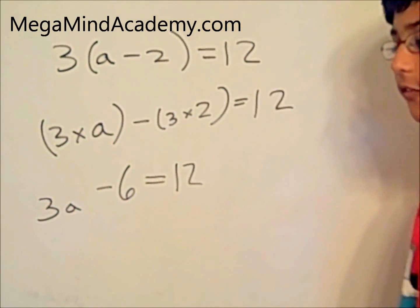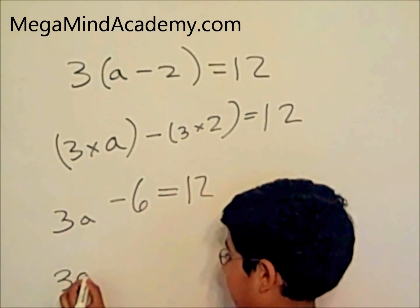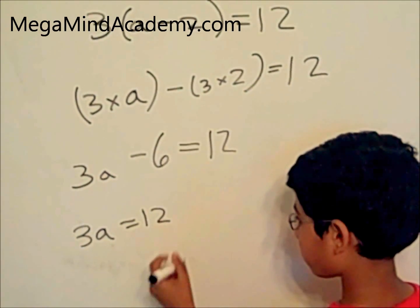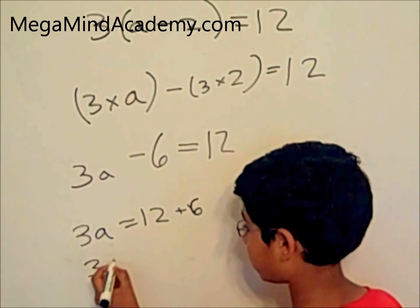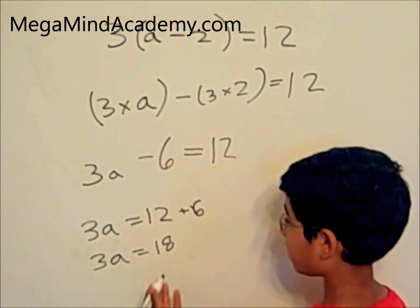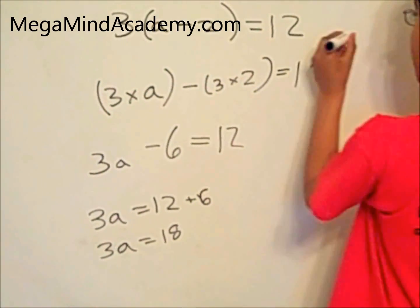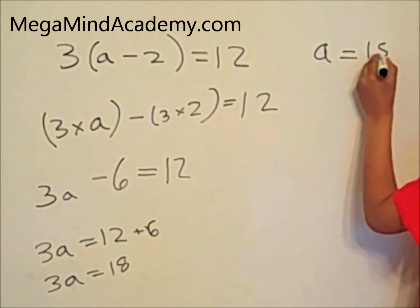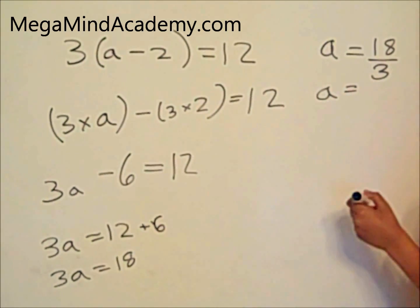Now, we need to figure out what 3a equals. So, 3a equals 12 plus 6. So, 3a equals 18, which is 12 plus 6. That means a equals 6.